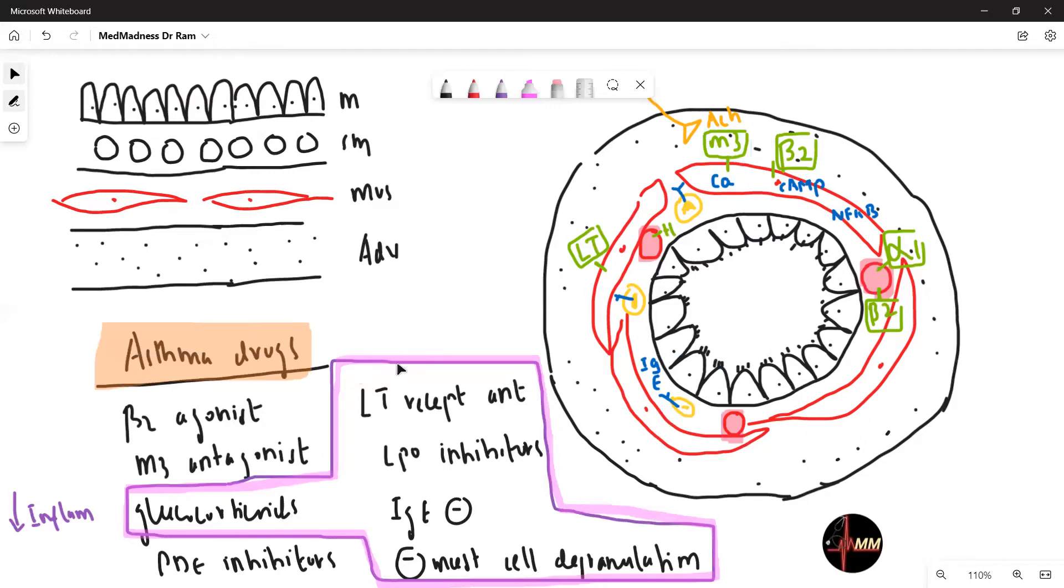All these which I have shown the violet, glucocorticoids, leukotriene antagonists, lipoxygenase inhibitors, or the drug that binds with IgE, or the drug that prevents mast cell degranulation - all these is going to decrease inflammation. If inflammation is decreased, the bronchoconstriction is prevented and also the edema is also prevented.